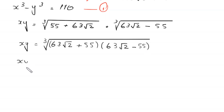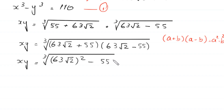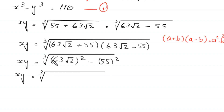Using the algebraic identity (a + b)(a − b) = a² − b², this becomes the cube root of (63√2)² − 55². We compute: (63√2)² = 7938 and 55² = 3025.